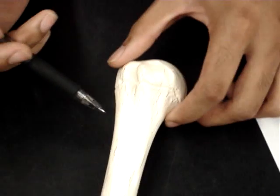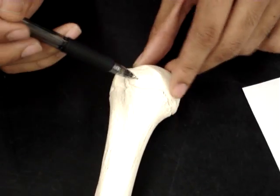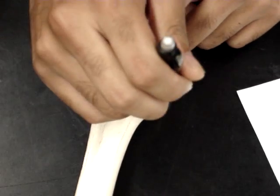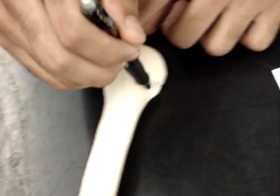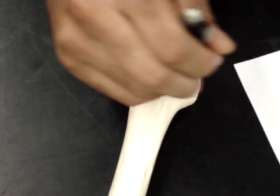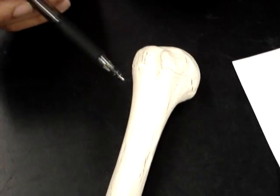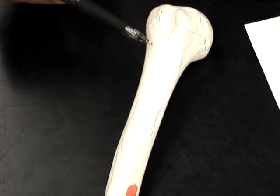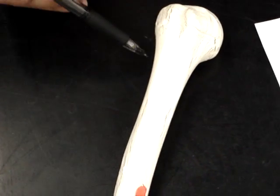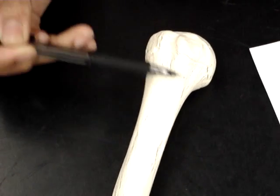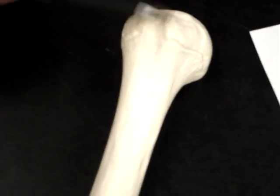Then we have the anatomical neck, which is right below the head. It goes around it, all the way to the back. So that's the anatomical neck right there. Then we have the surgical neck. The surgical neck is this area right here, and it goes all the way around. It's where the structure starts.